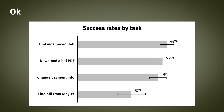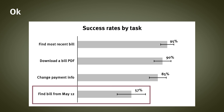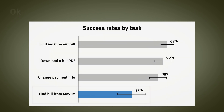Let's imagine that our goal is to draw attention to the fact that the last task, summarized as Find Bill from May 12, is the one that participants struggled with the most. If we want to draw attention to that bar, we can use a contrasting color for it, and then leave the rest in gray.